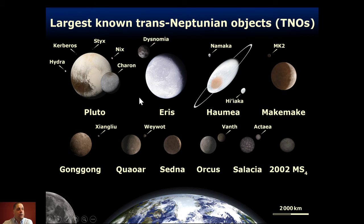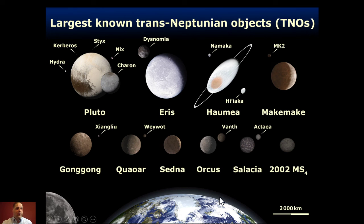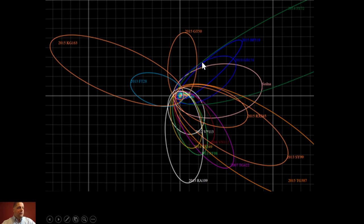There are other objects that are very similar — Haumea and Makemake, and a whole set of other trans-Neptunian objects that are very large. There's one called Sedna, which is very far out. Here you can see representations of the Earth's diameter compared to these other objects — they're significant bodies, not just small asteroids. You wouldn't want any of these hitting Earth. Here are the orbits of some trans-Neptunian objects, including Sedna.